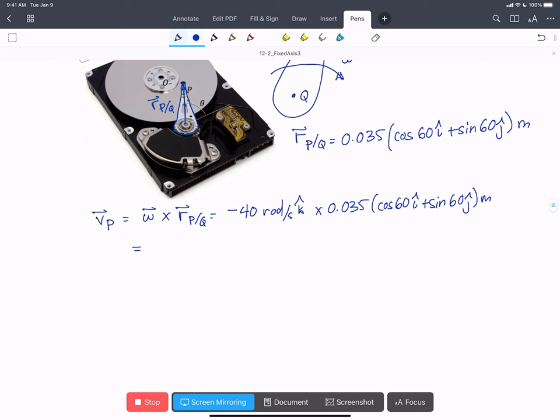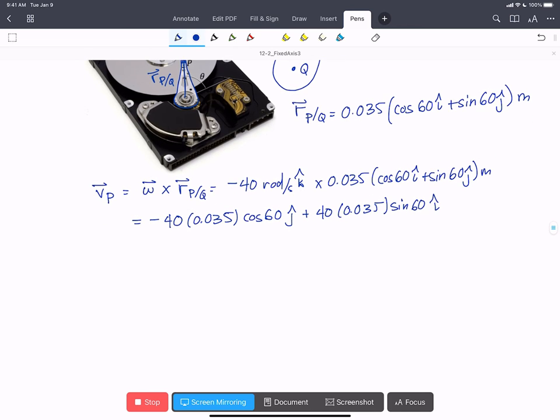And we can expand this and say it's minus 40 times 0.035 times cos 60 in the J hat. K cross I is minus J, plus 40 times 0.035 times sine 60 in the I hat. Minus K cross J is positive I.